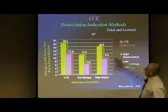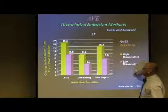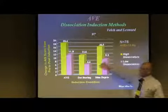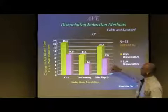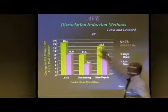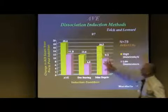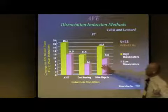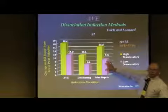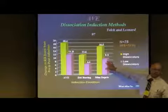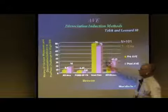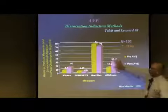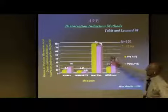This was another study done by Telch at the University of Texas in Austin, showing that when he looked at entrainment — these are good dissociators, these are poor dissociators — he looked at entrainment versus dot staring or stimulus deprivation, and entrainment was more effective than those techniques. He then did a second study; he's actually done six for us so far, and I'll show you his last study in a few minutes.